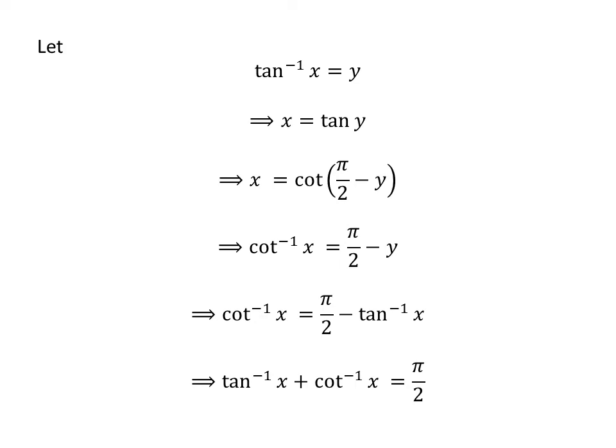Taking minus arctan(x) to the left side of the equation gives us arctan(x) plus arccot(x) equals π/2. So, the identity is proved.